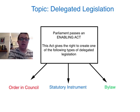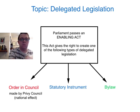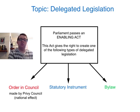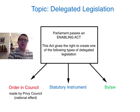Starting with the Order in Council. This is made by the Privy Council, which consists of the Queen and also senior members of Cabinet, including of course the UK Prime Minister. And when they pass an Order in Council, that will take a national effect — it will affect everybody in the country.